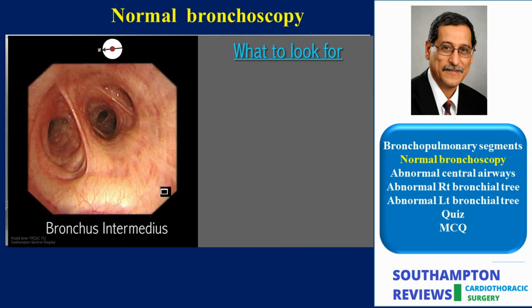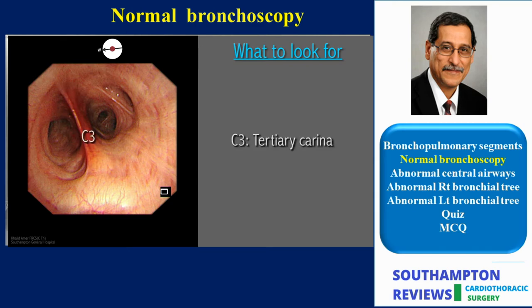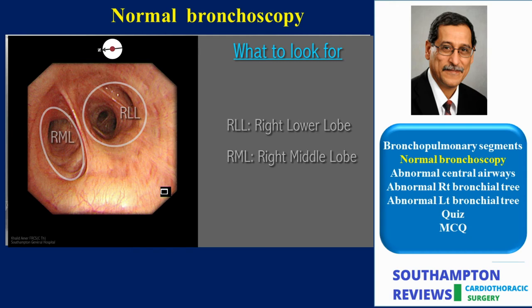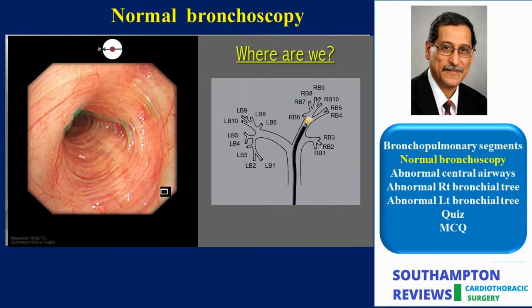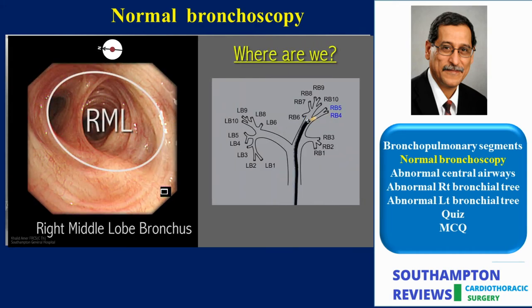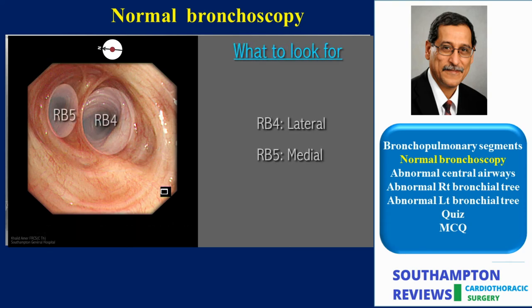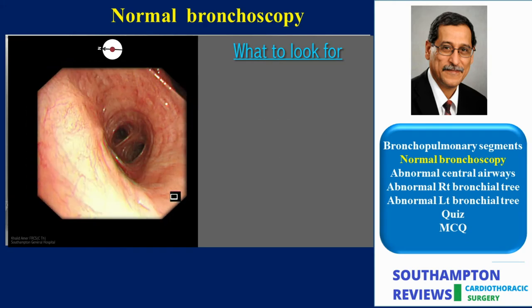I hope by now we have got used to the habit of seeing carina first. If so, let's identify the tertiary carina between the middle and lower lobe, and also make note of the next level of division — the quaternary carina between the apical lower and common basal segments of the lower lobe. It is of paramount importance to appreciate the hierarchy of the carinae and the higher or proximal origin of the tertiary carina in relation to the quaternary carina. We will start by examining the middle lobe bronchus, which divides into two segmental bronchi: the lateral or RB4, and the medial RB5. Next we will move to the common basal segments of the right lower lobe.